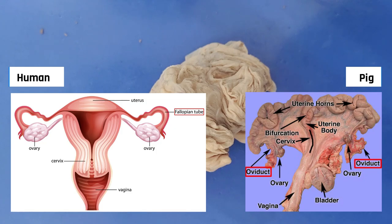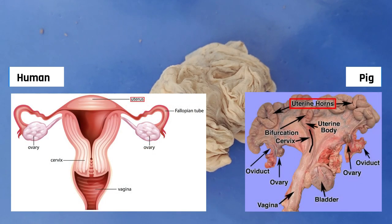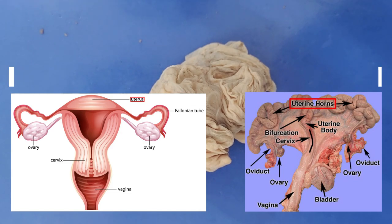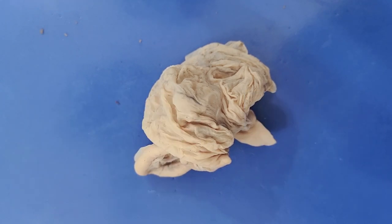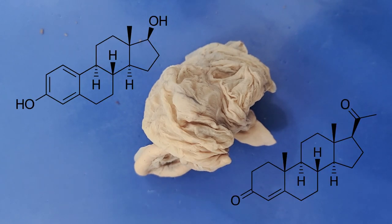In humans, the oocyte enters the fallopian tube where it is similarly fertilized by sperm. The embryo then implants and develops in the uterus in humans, and in the uterine horn in pigs. The ovary also has an endocrine function: it secretes the female sex steroid hormones estrogen and progesterone.